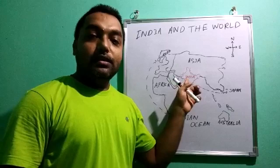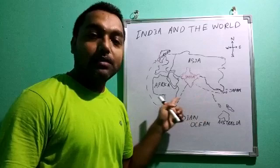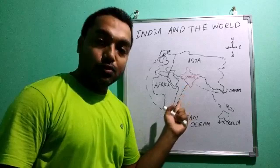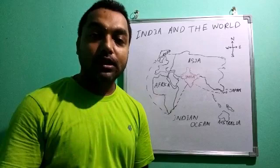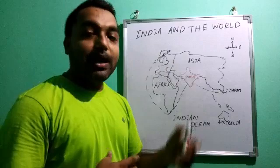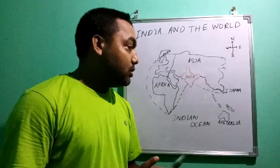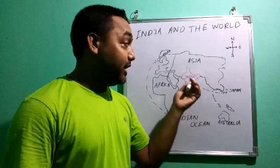Here you can see India and other parts of the world — India is centrally located. Through the ocean route — the way or road found in the ocean to go from one country to another or one continent to another with the help of ships — from the very past, many ocean routes were discovered to come to India from different parts of the world.